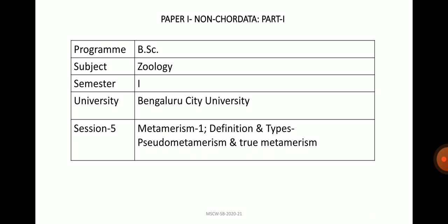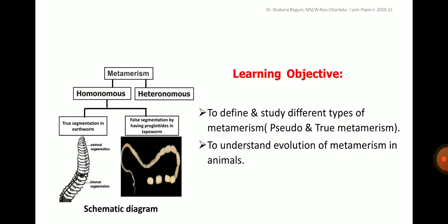Today, I am going to talk on the subtopic metamerism, its definition and types — pseudometamerism and true metamerism. The learning objectives are to define and study different types of metamerism, such as pseudometamerism and true metamerism, and to understand the evolution of metamerism in animals.